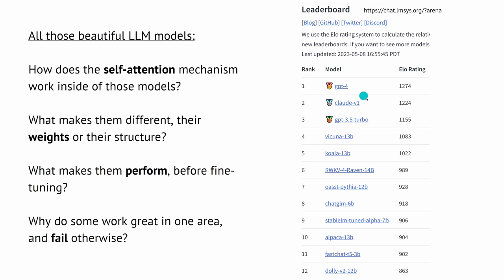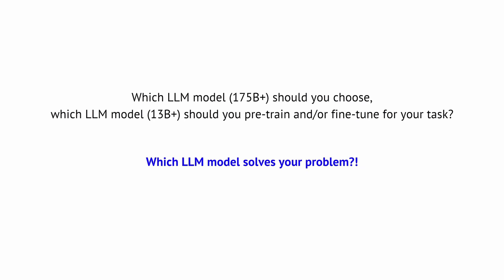You'll see the big GPT-4 or ChatGPT, and then you have the Vicuna, the Qual, the 13 billion trainable parameter models and so on. You may have a company or a business idea, a startup — so which model should you choose? Should you go for the commercial big GPT models that are really expensive? Or should you build your own model, starting with 13 billion trainable parameters? Should you pre-train it and then fine-tune it, or take a pre-trained model and only apply specific fine-tuning? Which LLM model solves your problem?